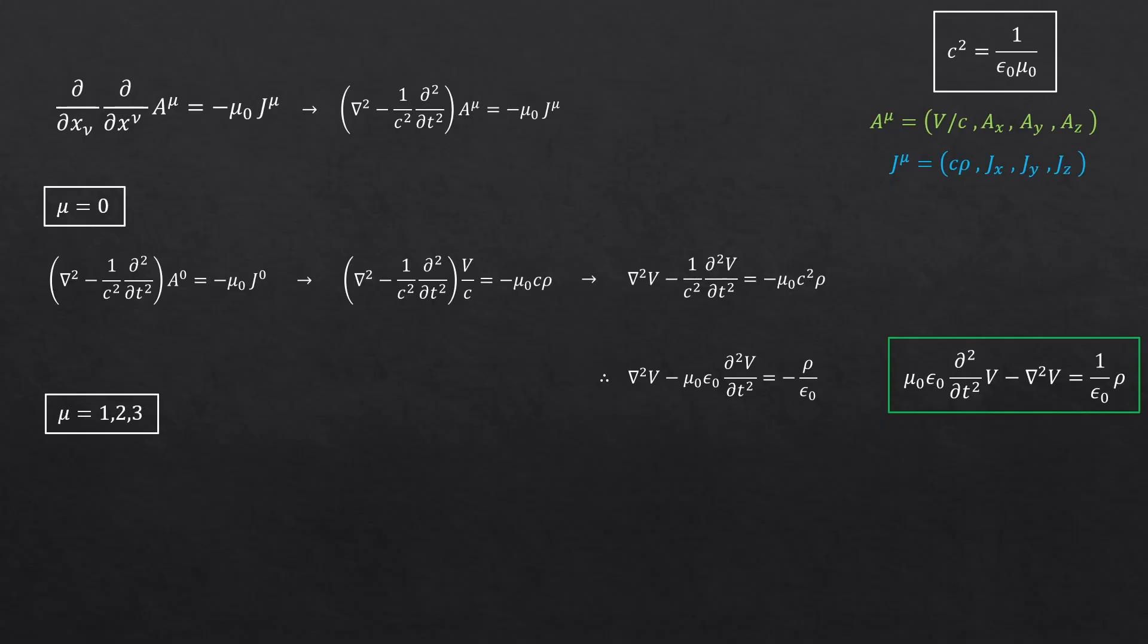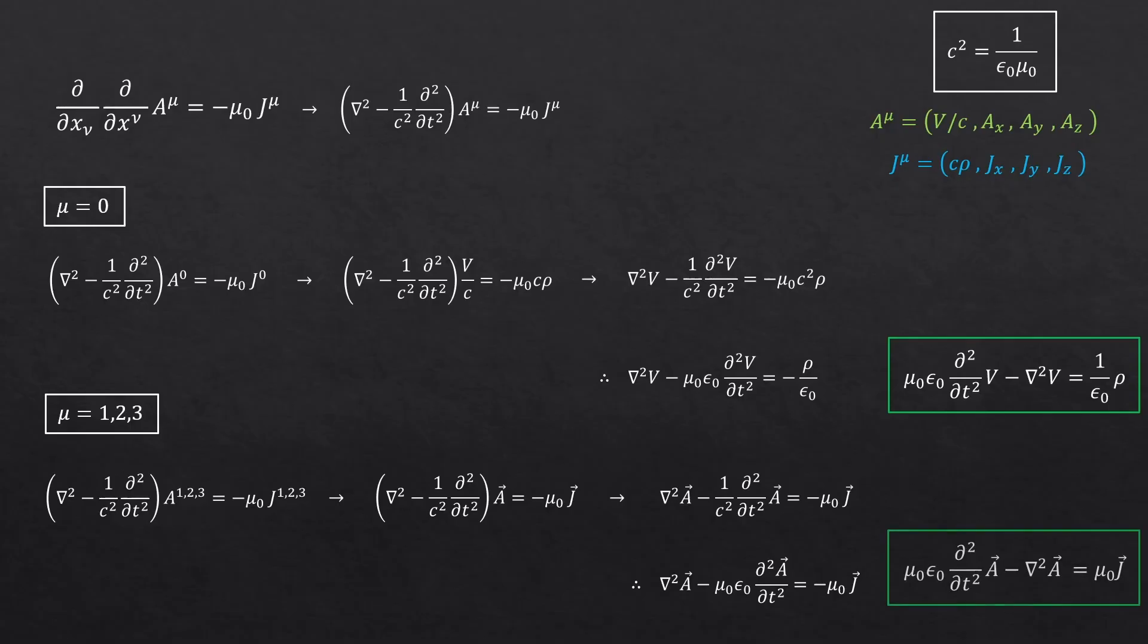Alright, this time, we consider the cases where the index mu equals 1, 2, and 3. These are the spatial components, so we can just write them as vectors. We easily arrive at this expression, which is the other one of the two Maxwell's equations, written in terms of the potentials.